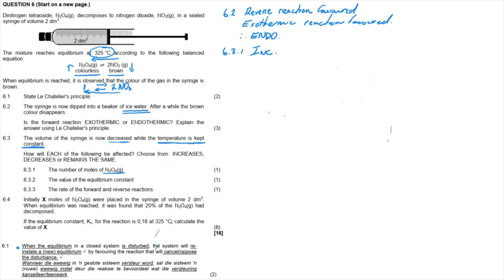Question 6.3.2: how is the equilibrium constant affected? Since temperature is kept constant, the value of Kc remains the same. The only factor that can affect the equilibrium constant is temperature, so as long as temperature is constant, Kc remains the same.